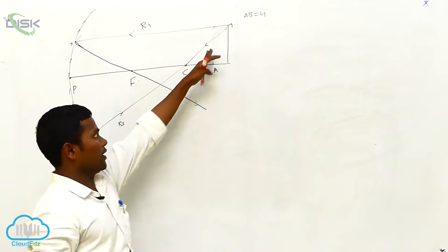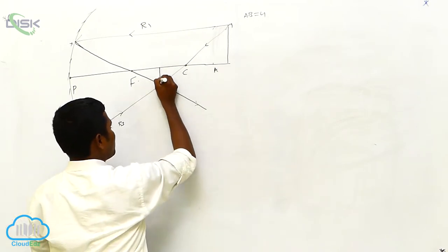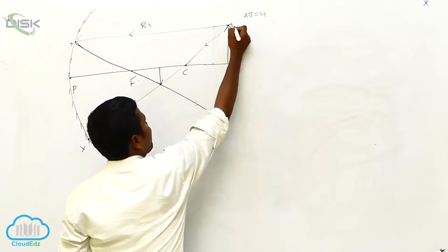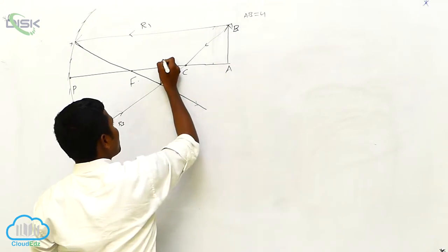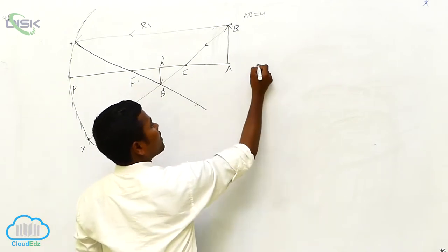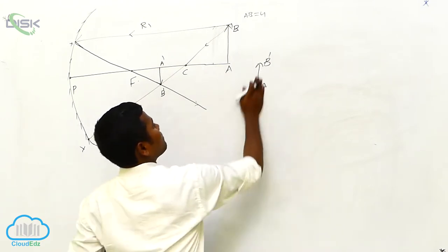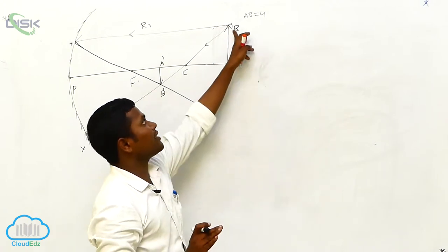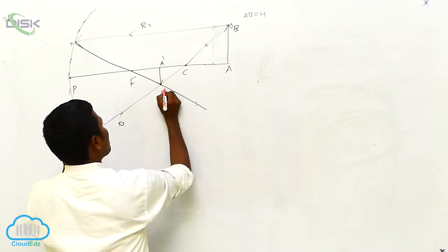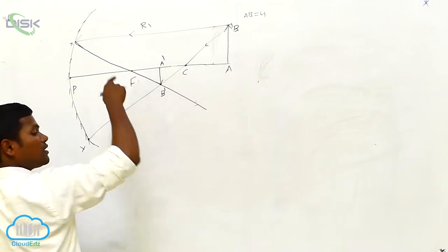R1 strikes on the mirror at point X and after striking passes through the focus. R3 is going back and where these rays meet — at that point you get the image. This is the image: which point is below is A, and which point is above is B. Here this is A-dash and this is B-dash. I consider the ray from point B, so I am showing B-dash here.